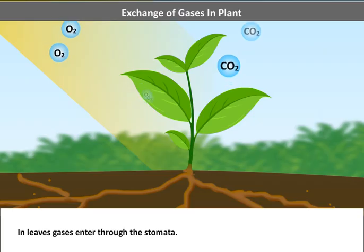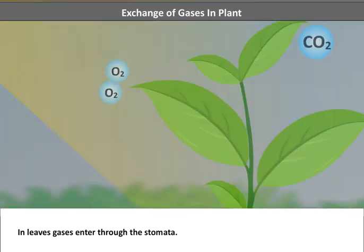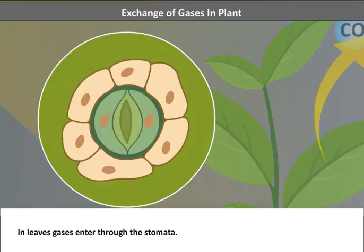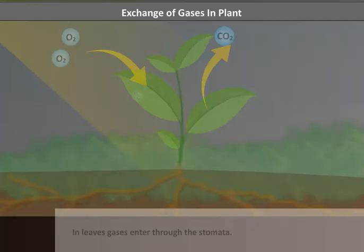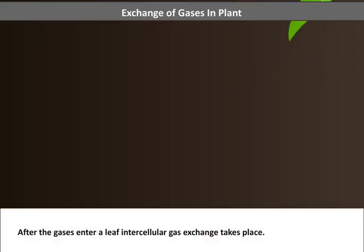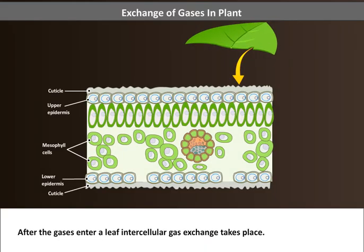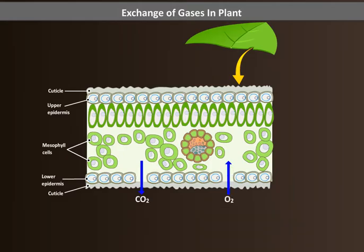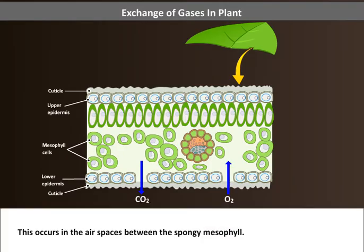In leaves, gases enter through the stomata. After the gases enter, intercellular gas exchange takes place. This occurs in the air spaces between the spongy mesophyll.